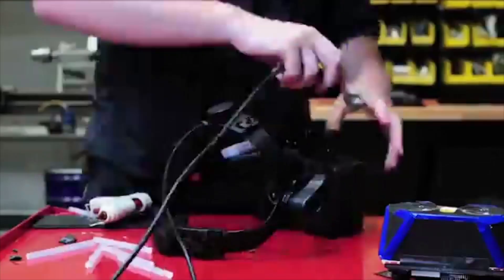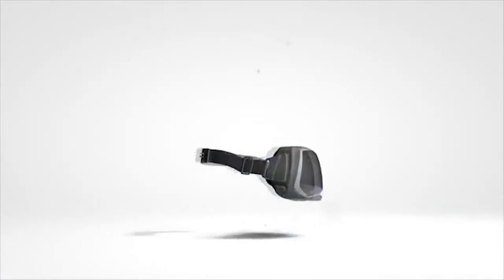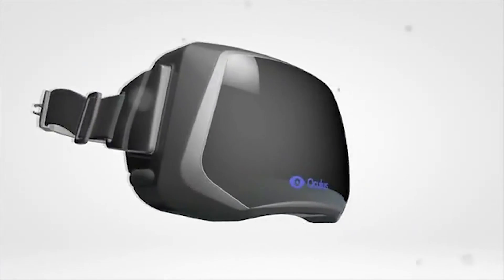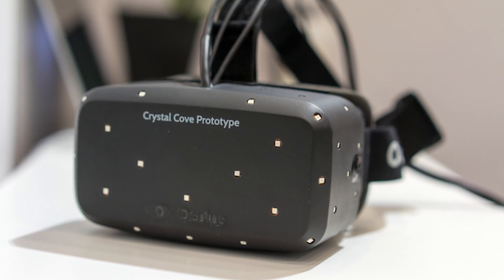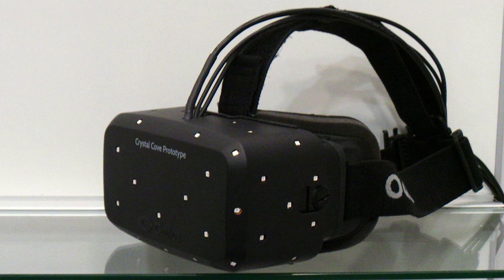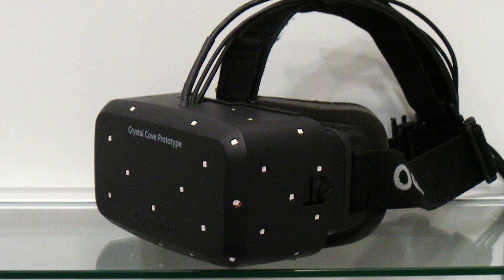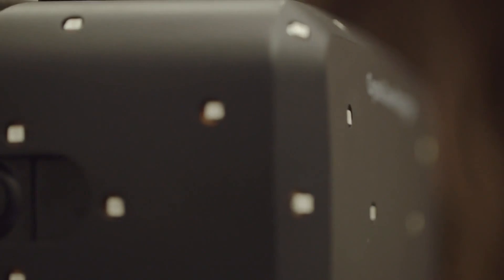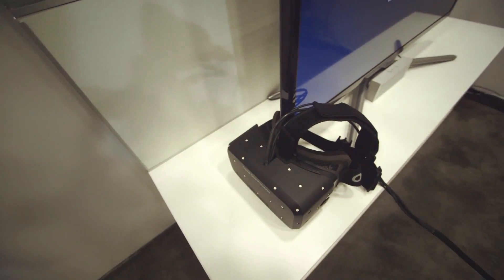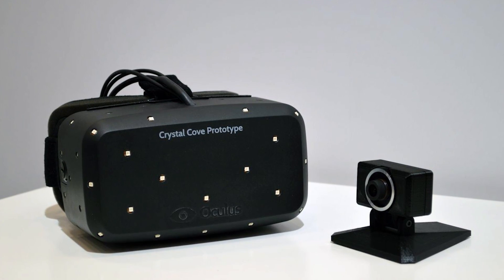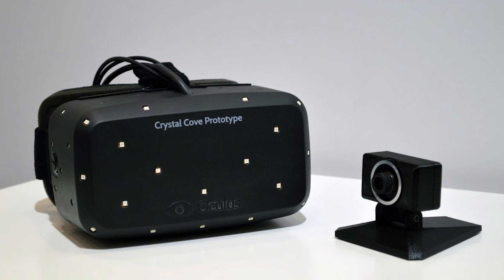At CES earlier this month, the Oculus Rift Crystal Cove prototype was released with better resolution, a better screen with less latency, and included the use of an external camera that can track dots installed on the headset. This improves the head tracking and adds the ability of the system to detect where the player is in 3D space, on top of its already really solid ability to detect where the player is looking.